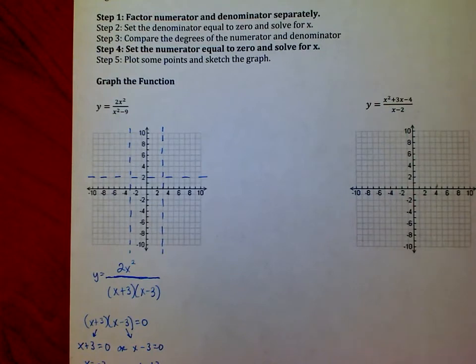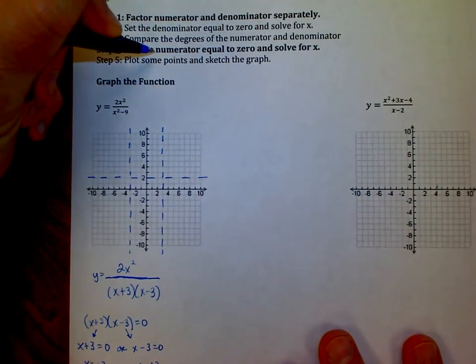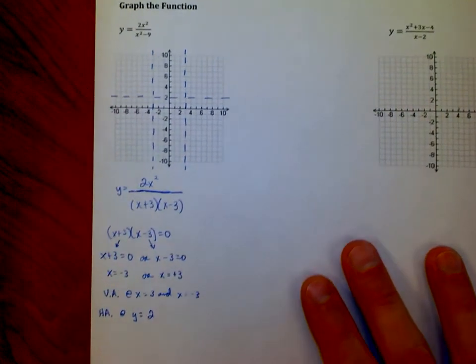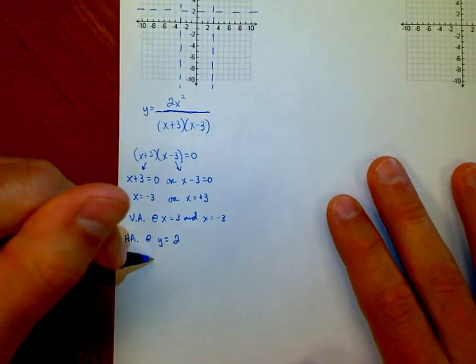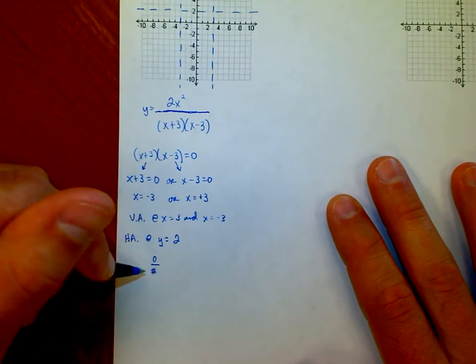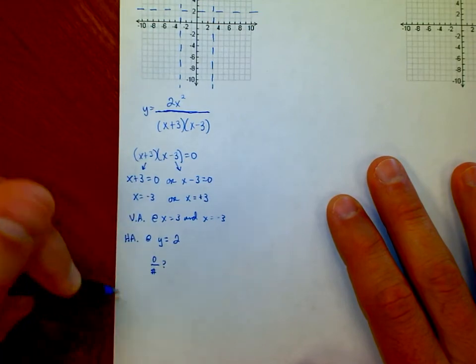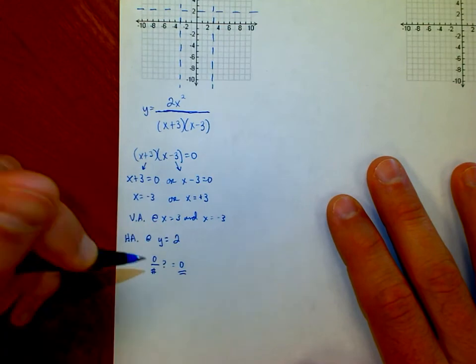The reason we're going to do that is because when I'm setting the numerator, that's the top of the function equal to 0, that means I'm really talking about where do I have 0 over like a value. 0 divided by any number is equal to 0.